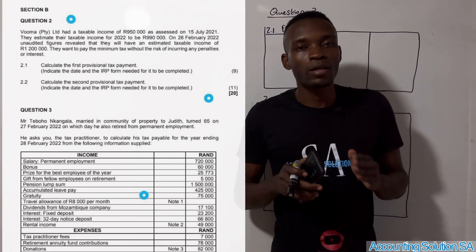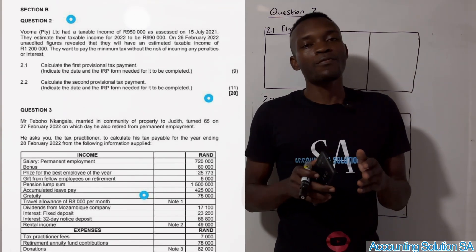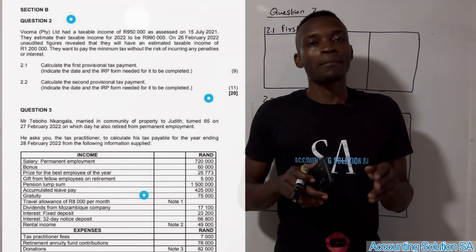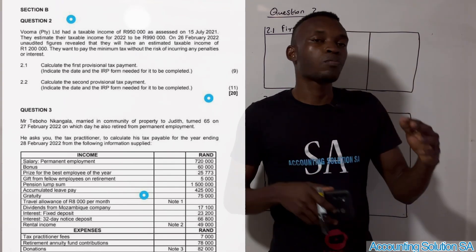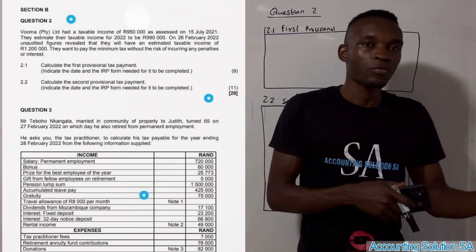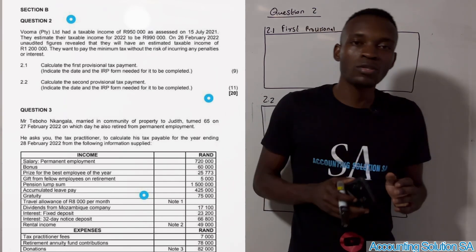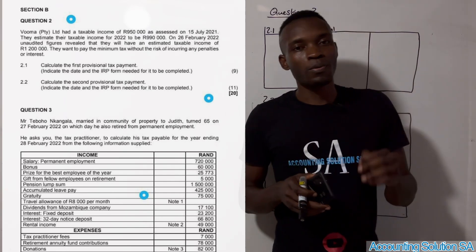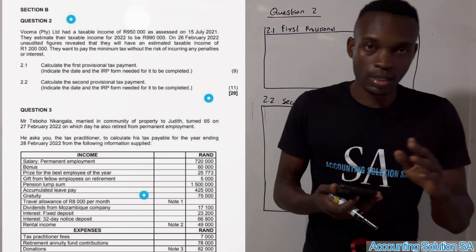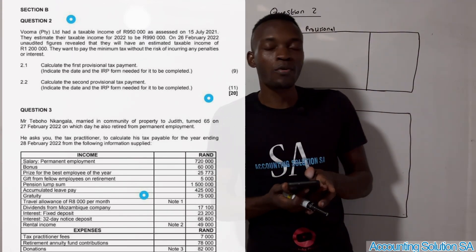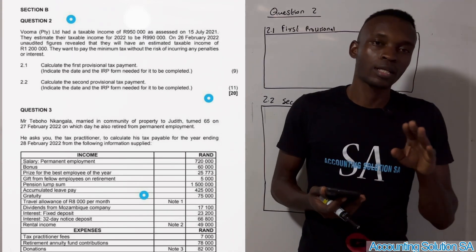Provisional payment is an estimation you need to pay during the year. By year end, if what you paid is more, SARS is going to give you a refund. If what you paid is less, you have to pay the balance to SARS. That's how it works.